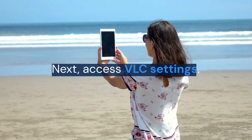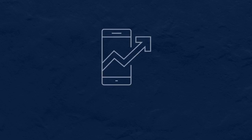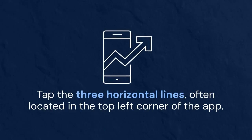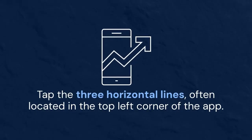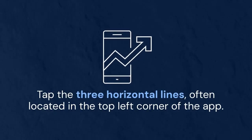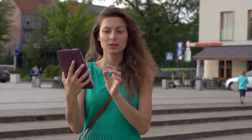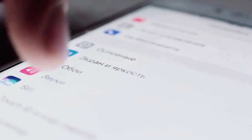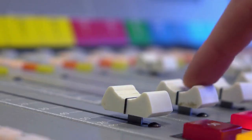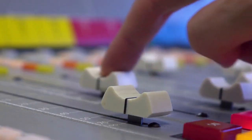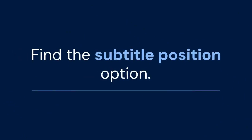Next, access VLC settings. Tap the three horizontal lines, often located in the top left corner of the app. This opens the side menu. Scroll down and tap on settings. Then look for advanced.